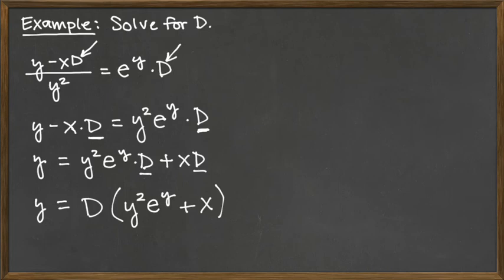And so now I'm one baby step away from getting d all by itself. And so we have y is equal to d times stuff. So that stuff is what's in the way to getting d by itself, but it's d times it. And so we can undo that multiplication by dividing by the stuff that's in the parentheses, and of course we've got to do that on both sides.